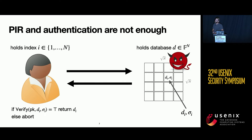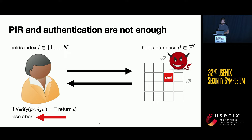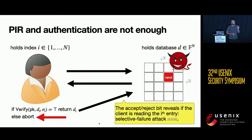But the server might still tamper with the database. If the server guesses the entry Alice is interested in, Alice will reject that record because the signature doesn't verify. If this information goes back to the server — for example because Alice issues a second query since she got garbage in the first one — this bit of information leaks to the server about the record Alice was querying.